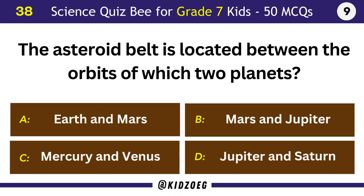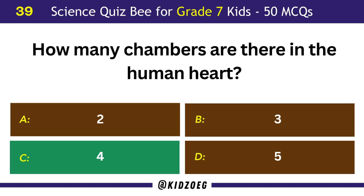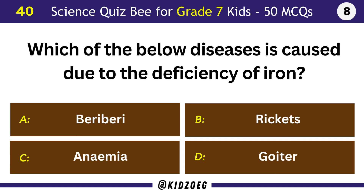The asteroid belt is located between the orbits of which two planets? Mars and Jupiter. How many chambers are there in the human heart? Which of the below diseases is caused due to the deficiency of iron? Anemia.